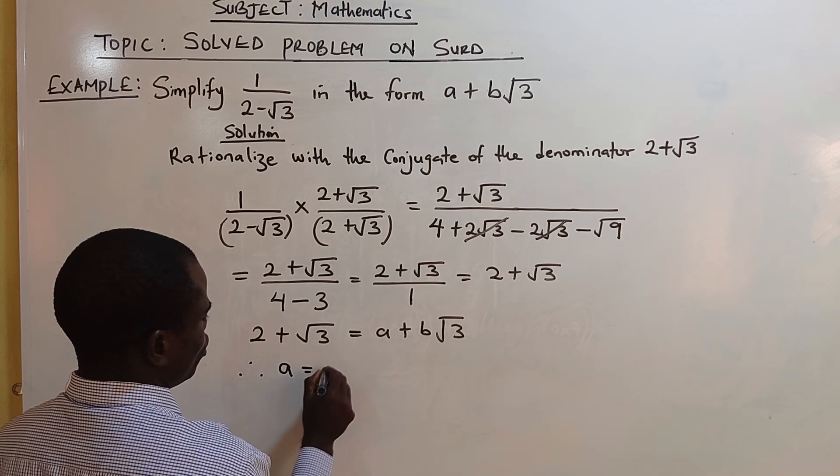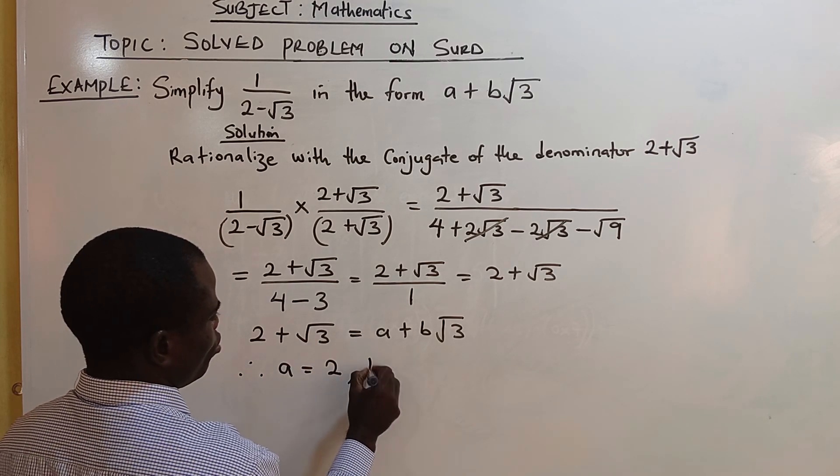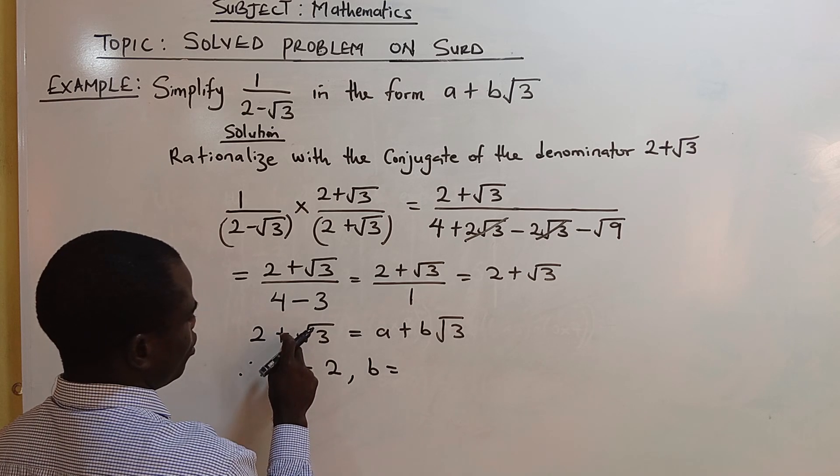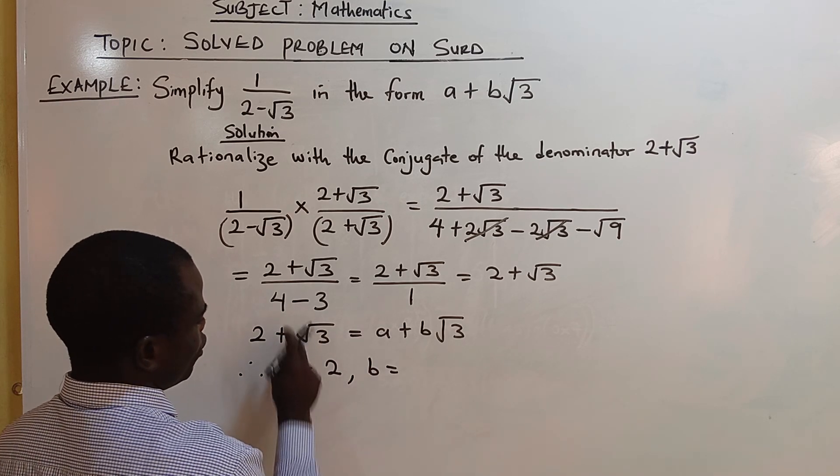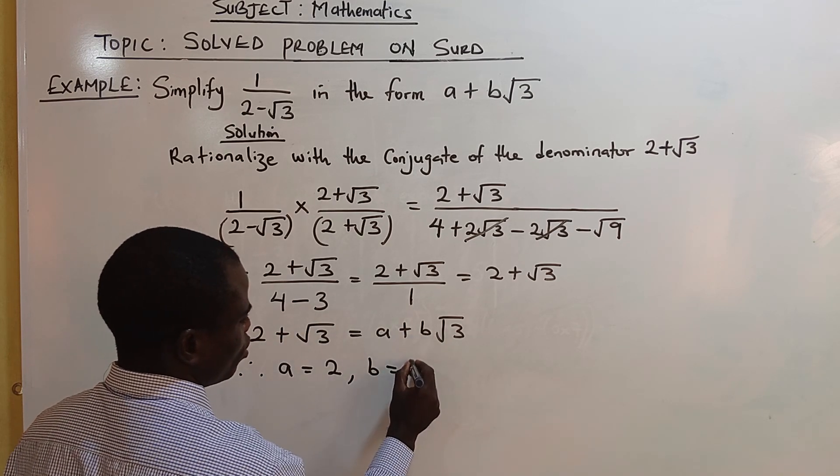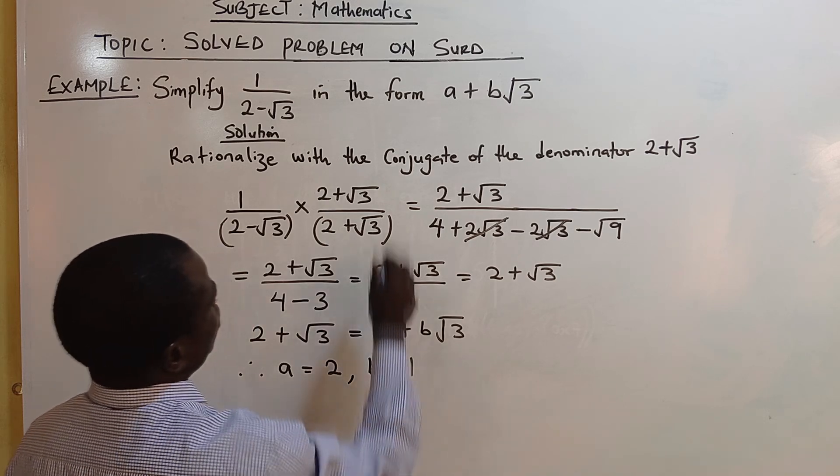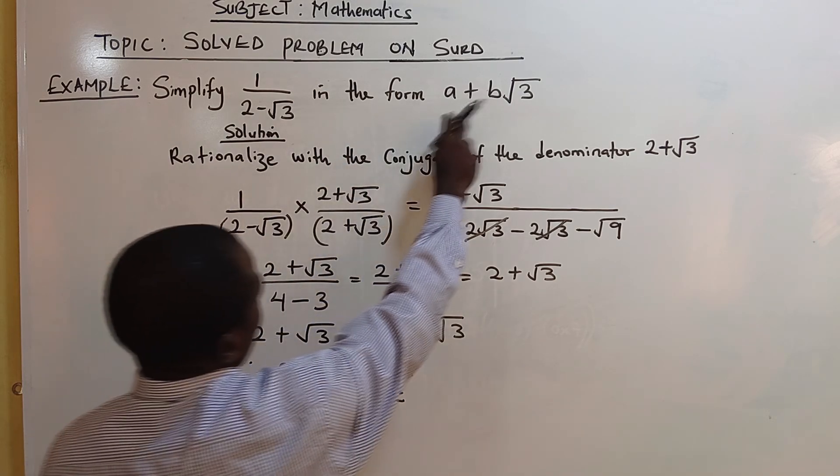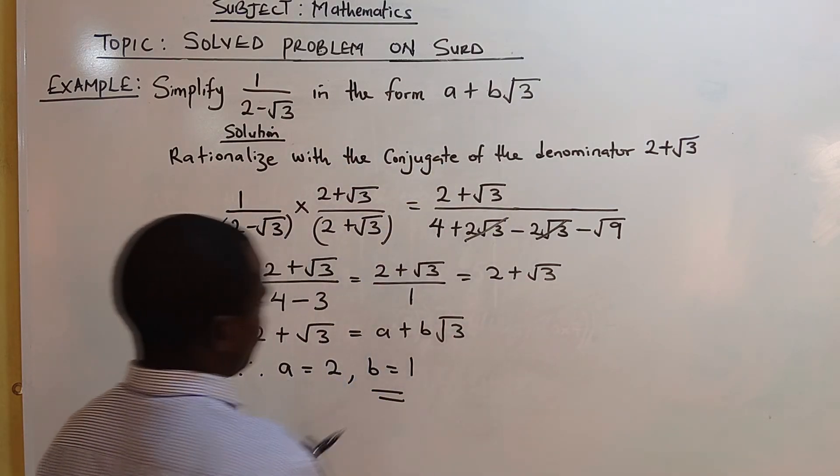Therefore a equals 2, b is 1, though it is invisible: 1 times root 3 gives you root 3. That means b equals 1, and we have simplified in the form a plus b root 3.